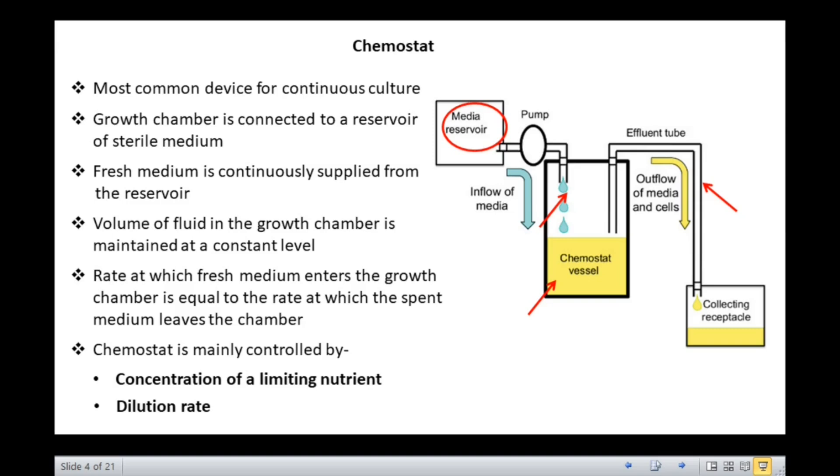If the dilution rate is very low, some of the cells might die due to lack of nutrients because the limiting nutrient is not being added fast enough to keep up with the cell metabolism. At the other extreme, if the dilution rate is very high, the cells might actually be washed out of the growth chamber because the dilution rate is greater than the maximum growth rate. Hence, a chemostat operates best at low dilution rates.